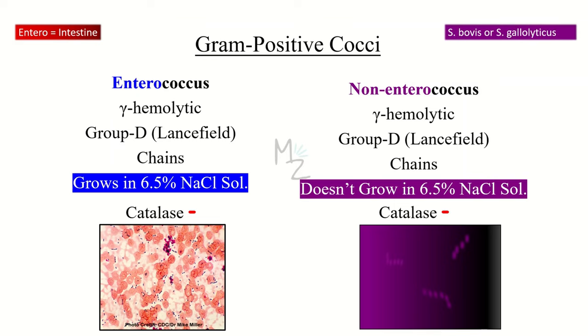Non-enterococcus is also called Streptococcus bovis or Streptococcus gallioliticus. Both are gamma-hemolytic bacteria, both belong to group D of Lancefield classification, and both occur in chains.